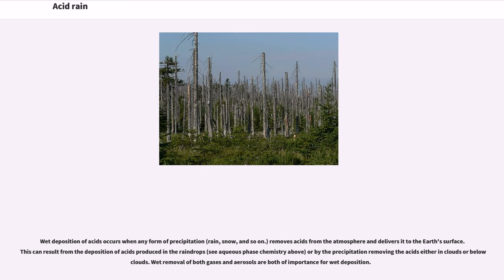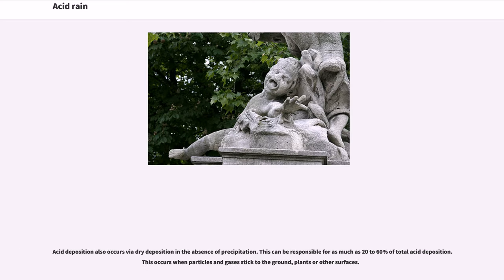Wet deposition of acids occurs when any form of precipitation — rain, snow, and so on — removes acids from the atmosphere and delivers it to the earth's surface. This can result from the deposition of acids produced in the raindrops or by the precipitation removing the acids either in clouds or below clouds. Wet removal of both gases and aerosols are both of importance for wet deposition. Acid deposition also occurs via dry deposition in the absence of precipitation, which can be responsible for as much as 20 to 60 percent of total acid deposition. This occurs when particles and gases stick to the ground, plants or other surfaces.